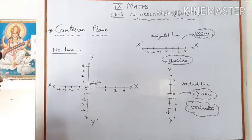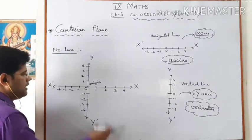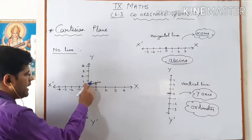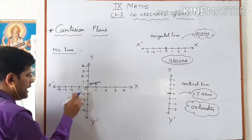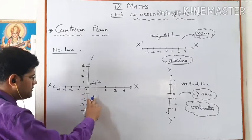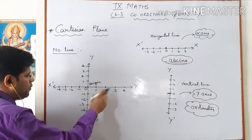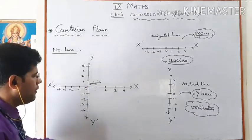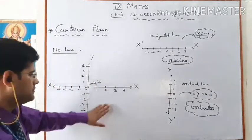One special thing about this origin: it is mutually perpendicular to each of the axes. Between OX and OY the angle is 90 degrees. Between OY and OX' the angle is 90 degrees. Between OX' and OY' the angle is 90 degrees. And between OY' and OX the angle is also 90 degrees. The whole system has four axes meeting at right angles.